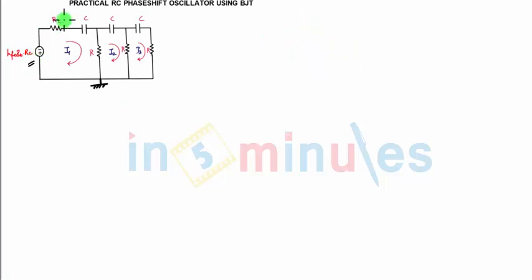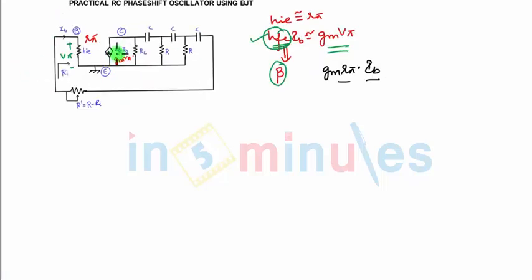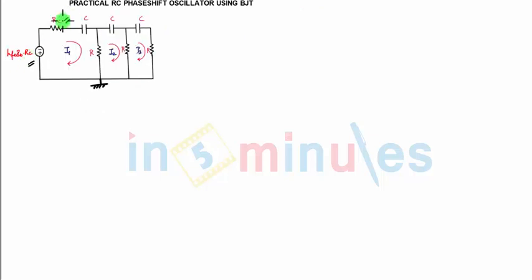Now we need to do the analysis of this. At the input we have h_fe i_b into RC, and RC. That is, this current source in parallel with resistance, that part is converted to a voltage source in series with resistance over here.